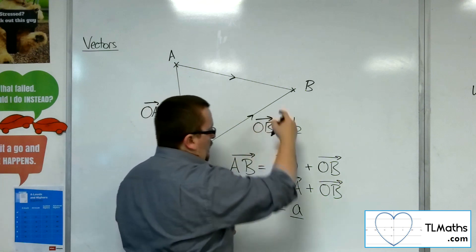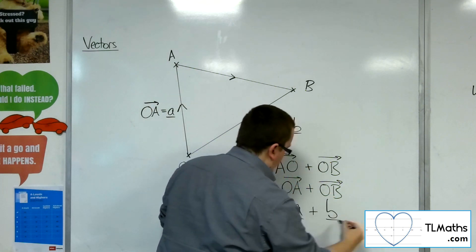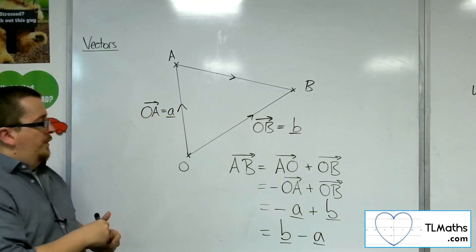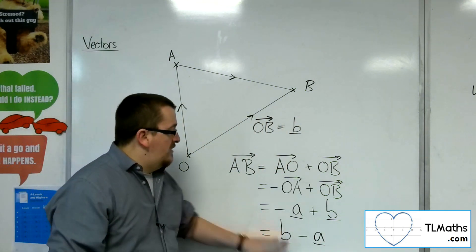And OB is positive B. So if I just reverse the order of those two terms, we get that AB is B minus A.